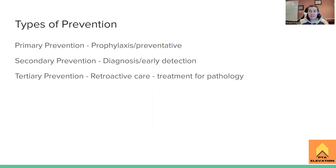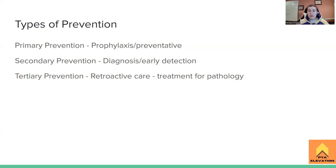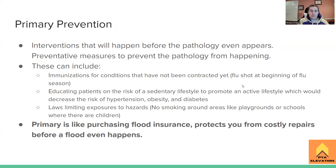Secondary prevention involves diagnostic components, tests, and early detection. For example, doing a mammogram and identifying breast cancer very early so you can get right into treatment — that's secondary prevention. These routine tests make sure we can identify problems early so we can begin treatment. Tertiary prevention is the actual treatment — retroactive care. We already have the pathology; this is treatment for it. On the cancer example, this would be chemotherapy.